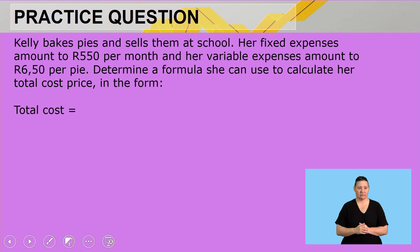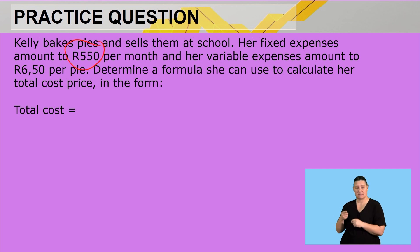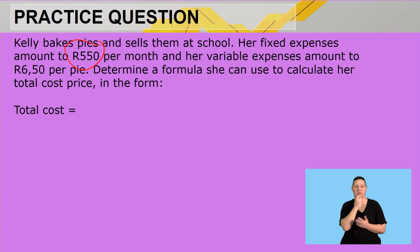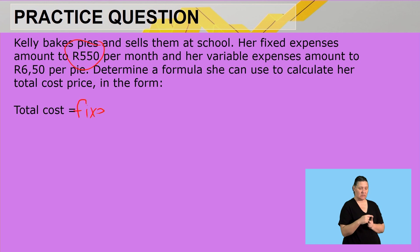Kelly bakes pies and sells them at school. Her fixed expenses amount to R550 per month and her variable expenses amount to R650 per pie. Determine a formula that she can use to calculate her total cost in the form: total cost equals the rest of the equation. Remember, total cost is always your fixed cost plus your variable cost.